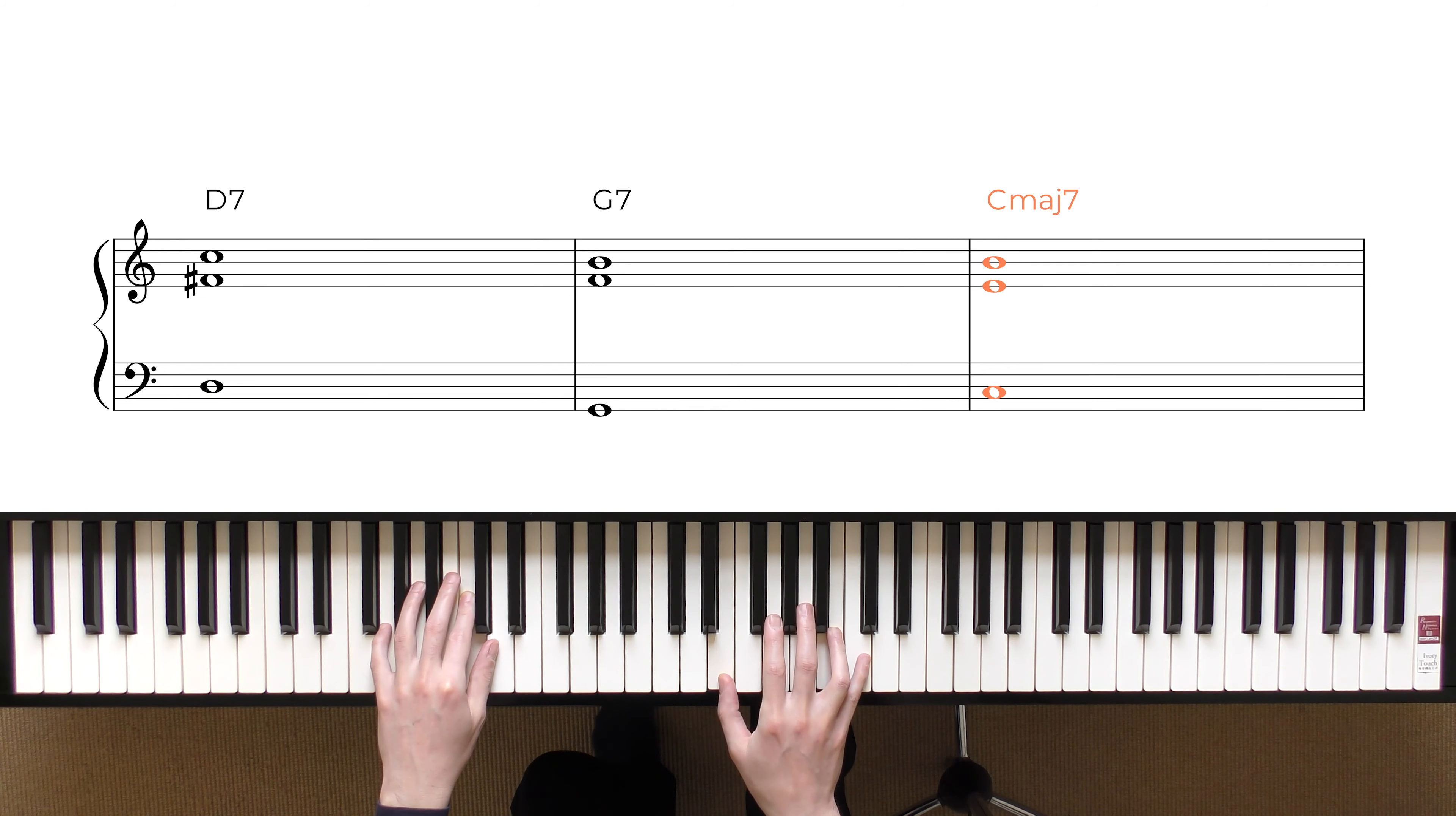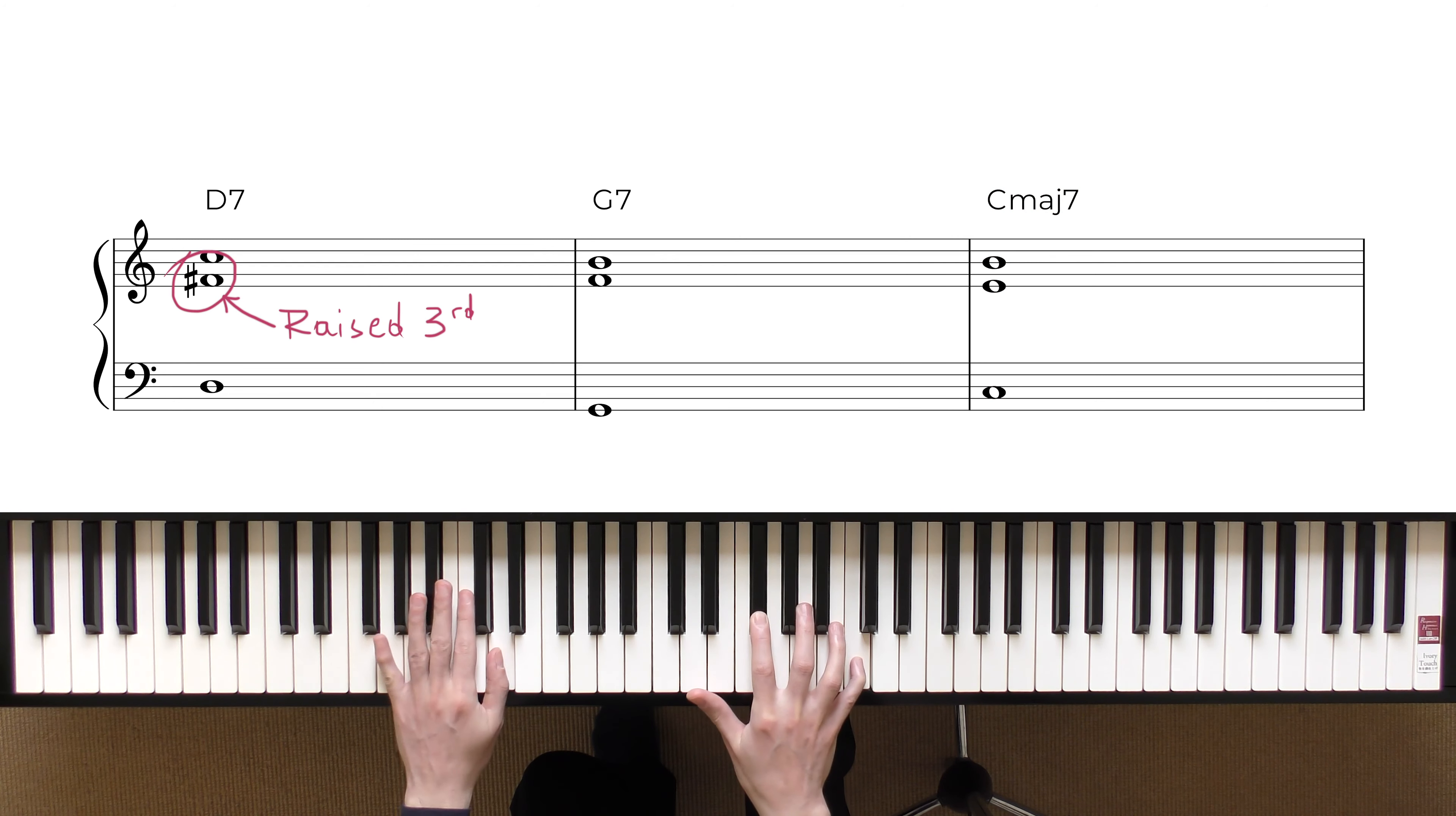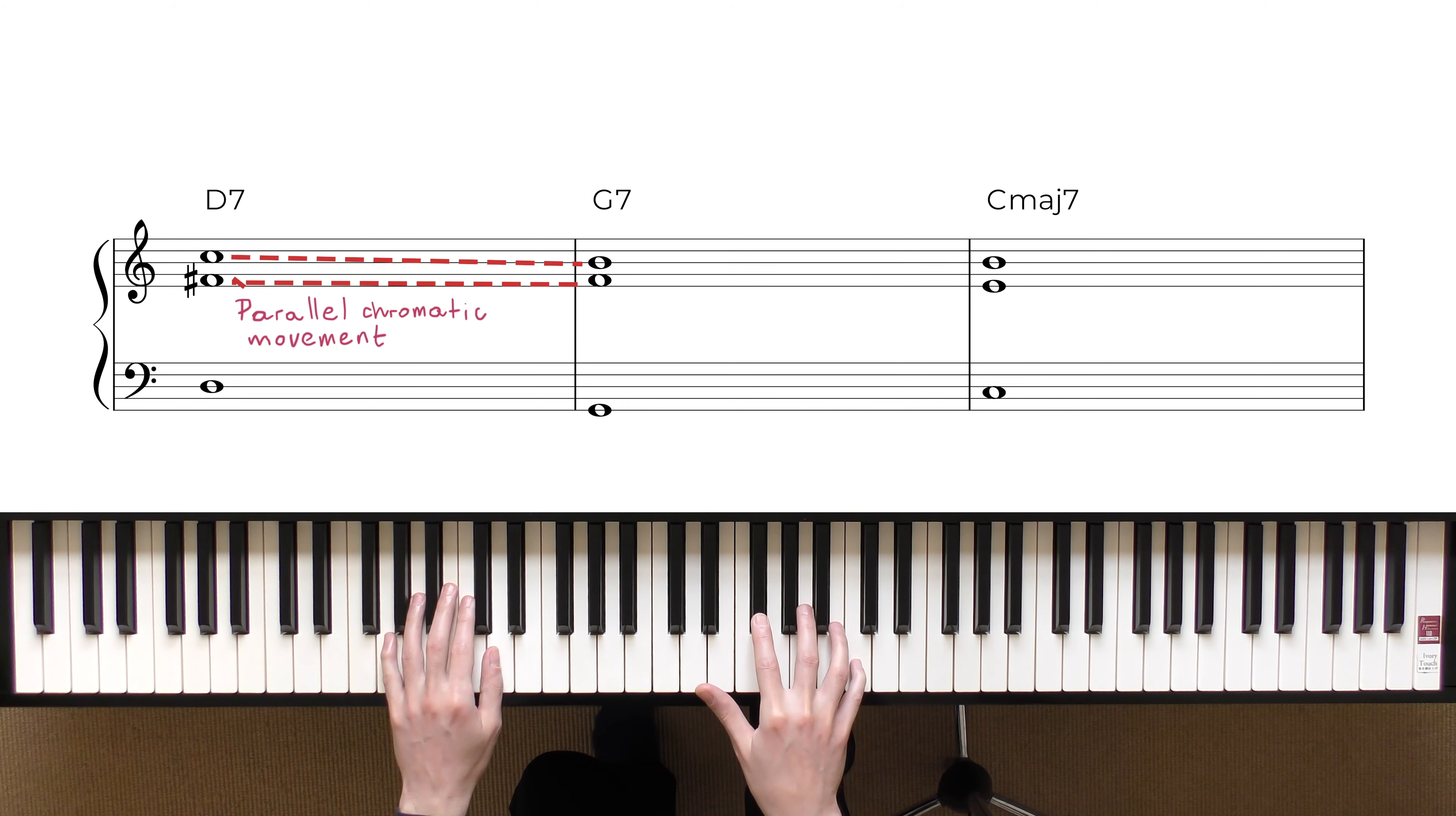So, this is a bit different. You have the raised 3rd to make the chord dominant for the 2nd degree. So, in this case, the conduction is a bit different, because it descends chromatically for both the 3rd and the 7th.